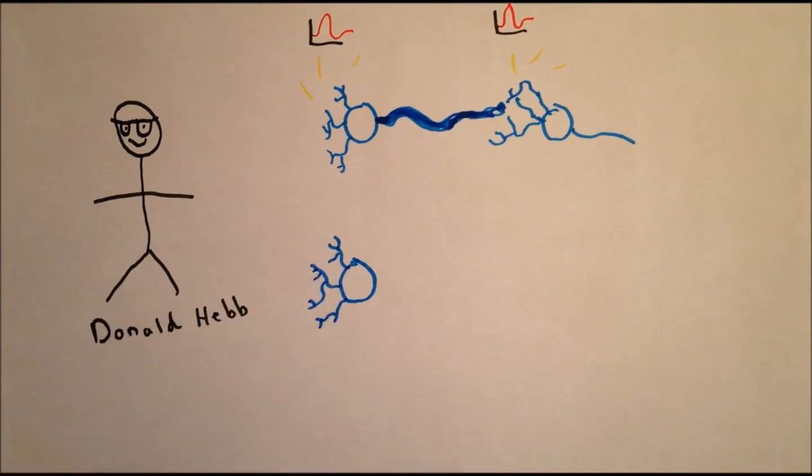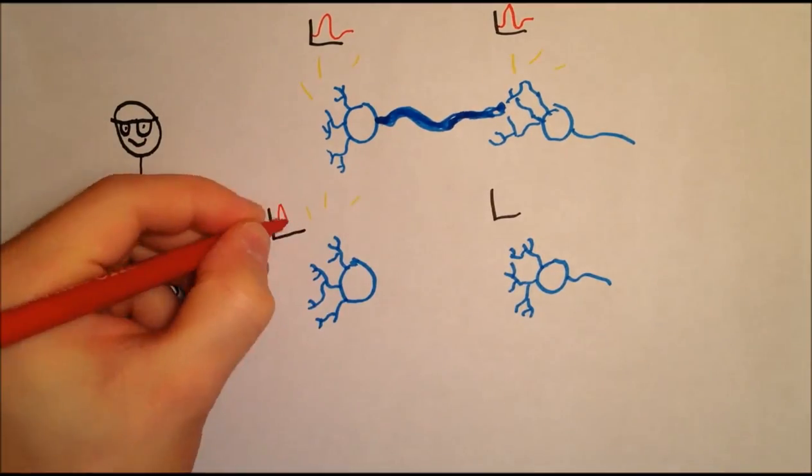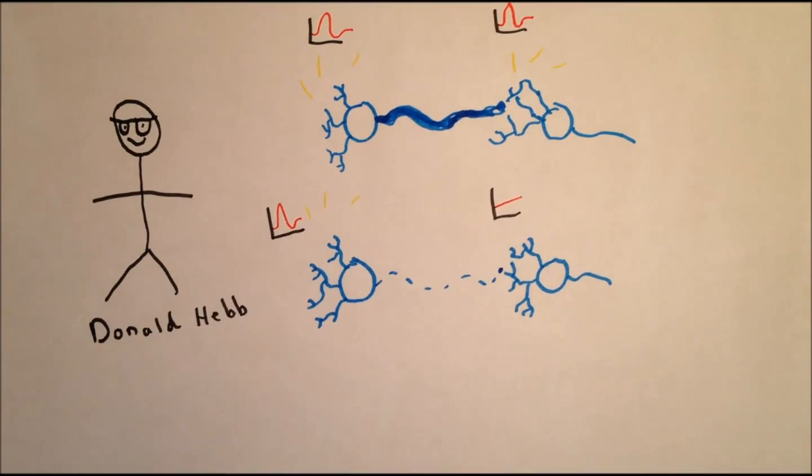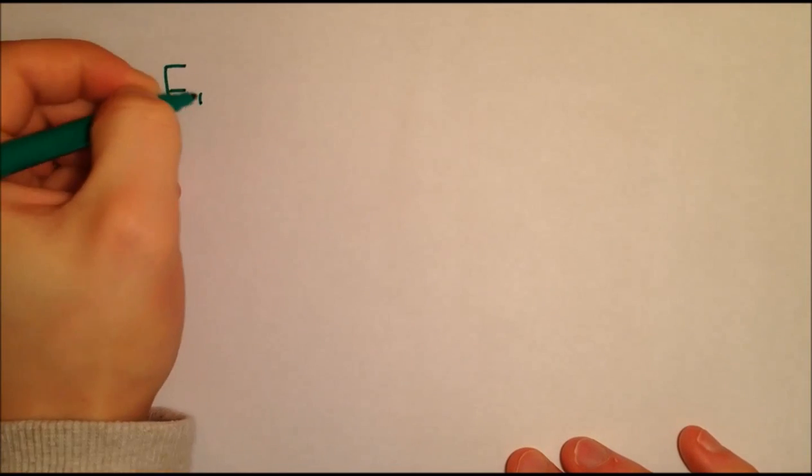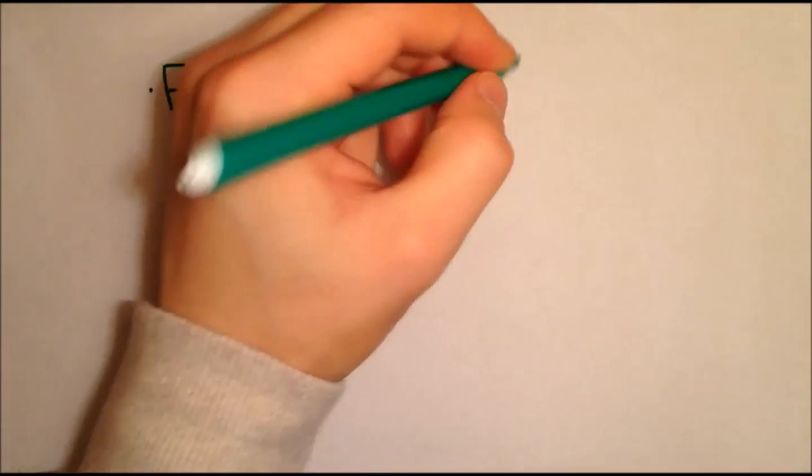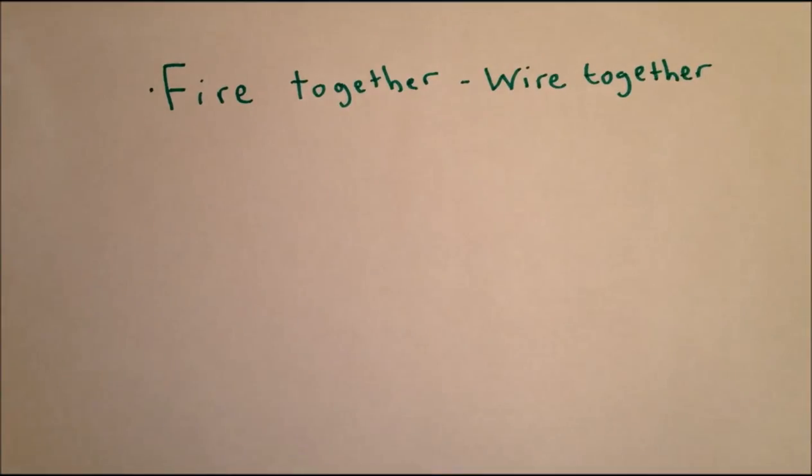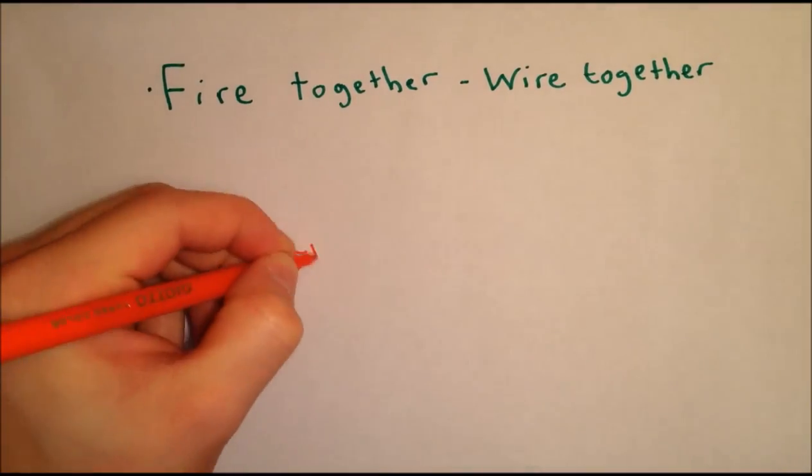And when two neurons repeatedly fire in an uncoordinated manner, the connections between them weaken, and they are more likely to act independently in the future. This can be simplified to the mantra: cells that fire together wire together, and cells that fire apart wire apart.